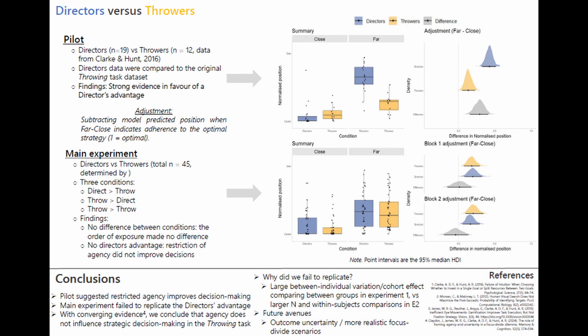If agency enables better focus divide decisions, then directors should be closer to the optimal strategy than throwers are. For the analyses, we're interested in the adjustment effect — that is, the difference in model predictive position, far minus close, as a measure of adherence to the optimal strategy. The closer the value to one, the closer to optimal.